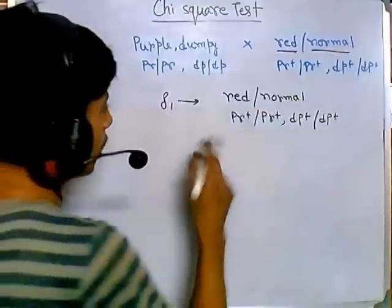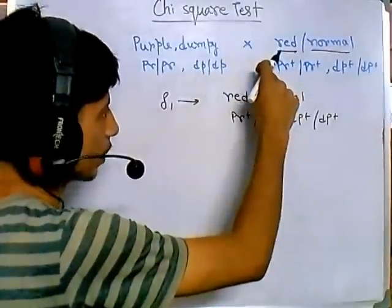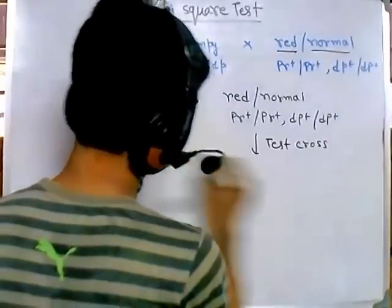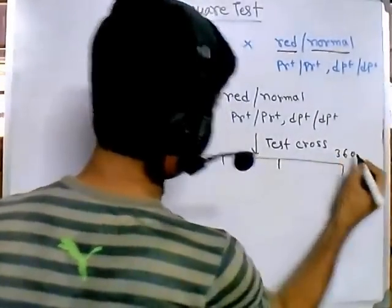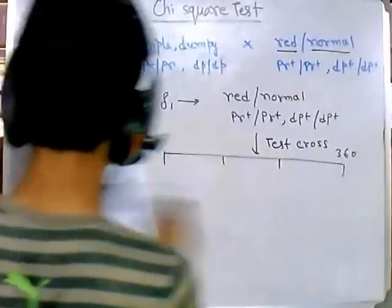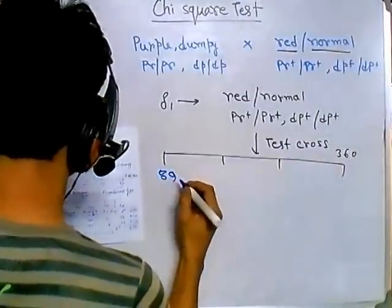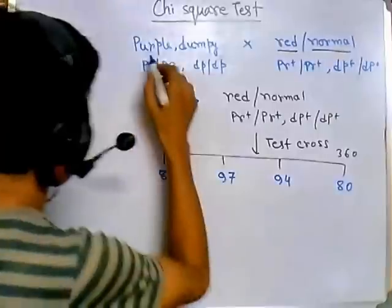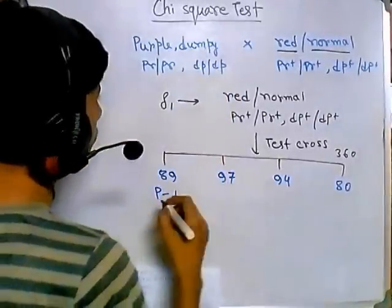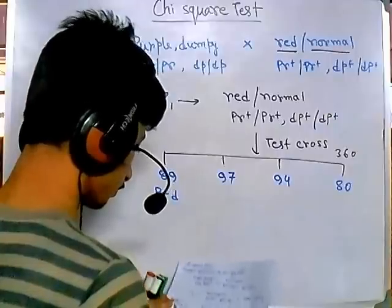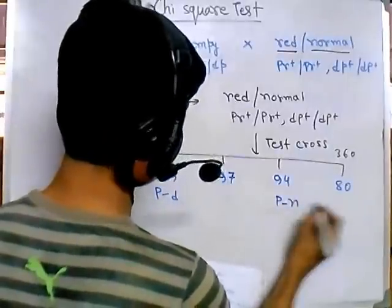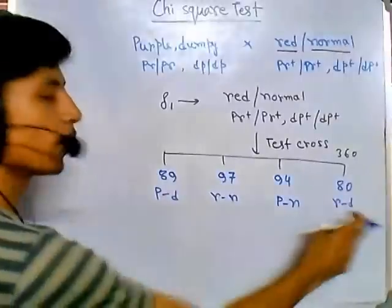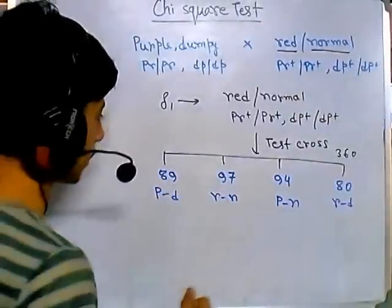Once we have the F1 offspring, we perform a test cross of the F1 offspring with the parental type. After that test cross, suppose we get a total of 360 individuals. In this total of 360 individuals, the experiment gives us data: 89, 97, and two other values for four different phenotype possibilities — purple dumpy, purple normal, red normal, and red dumpy.